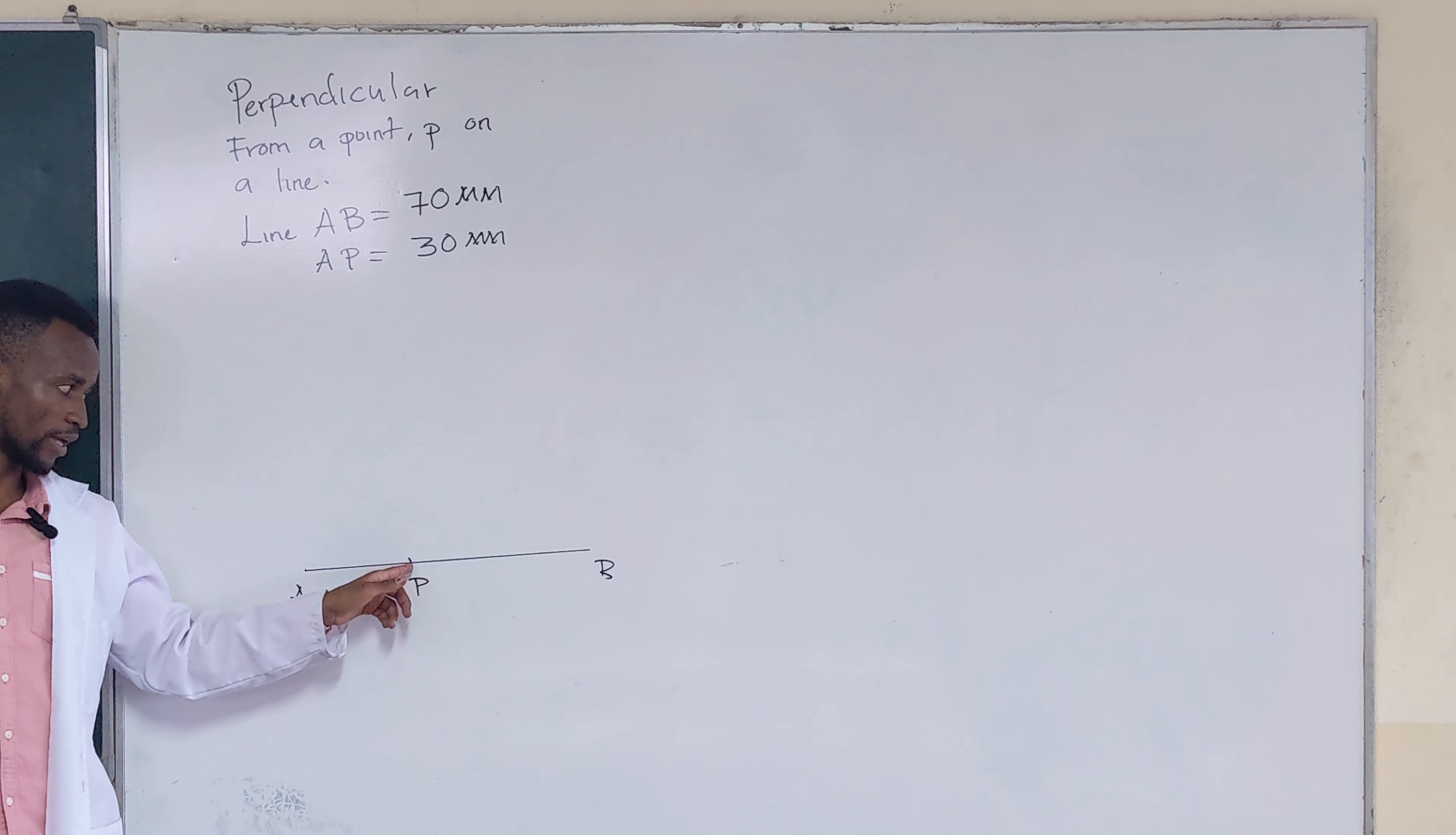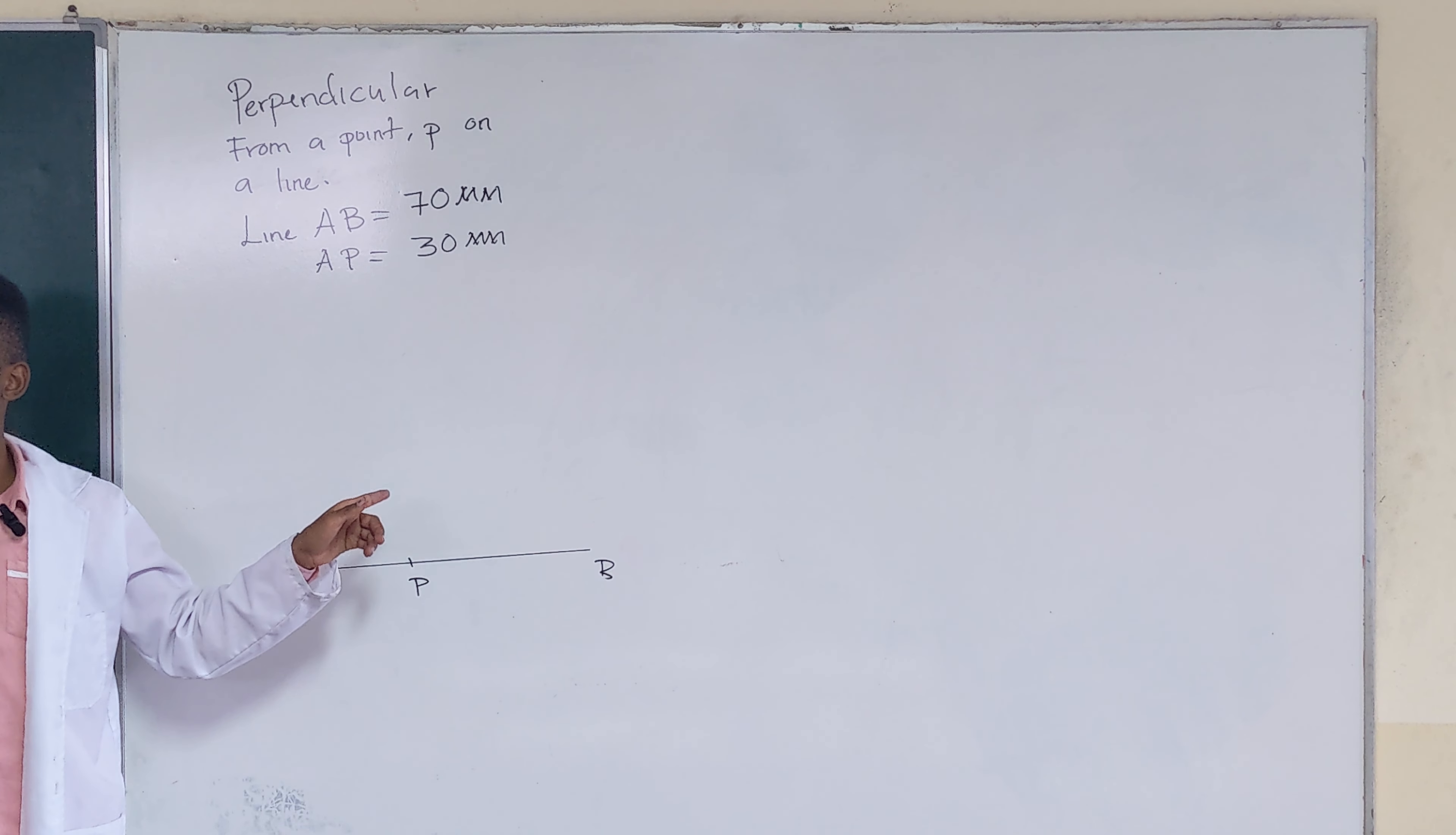Now, you draw a line from point P that will meet line AB at 90 degrees. You get the point.